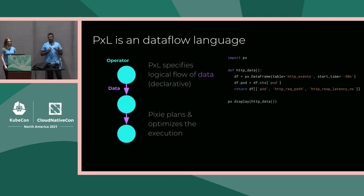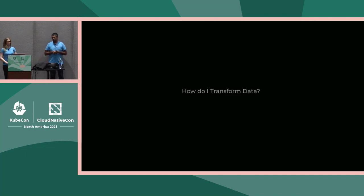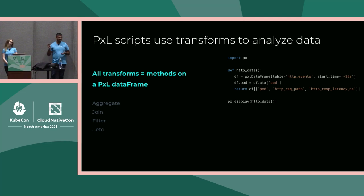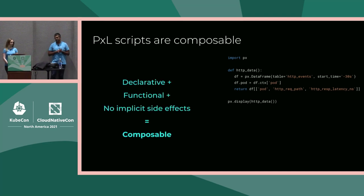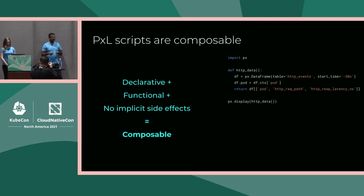PxL is what people call a data flow language — it specifies a logical flow of data, and it's Pixie's job to figure out how to optimize and execute this efficiently. PxL scripts can be used to transform and analyze your data. We support aggregates, joins, filters, and more. The good thing about PxL is that it's composable — it's a declarative spec, kind of like SQL. It is fully functional with no implicit side effects, which means you can build workflows off of each other. If you look at Pixie's UI, you'll see that we compose multiple scripts together to generate our entire user interface.